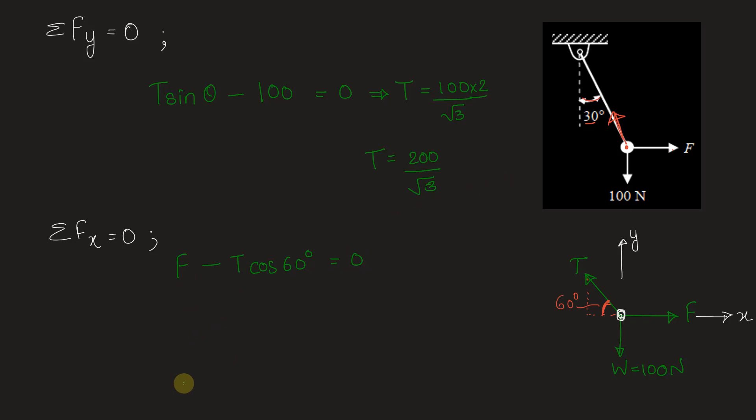We need to find F. We have T from here, let's just put it. We have F is equal to T cos theta. Putting the value of T: 200 by root 3 into cos 60 - value is 1 by 2. So the answer that we have is 100 upon root 3. By digital calculator, if you calculate this value it turns out to be 57.735 Newton.